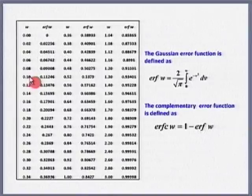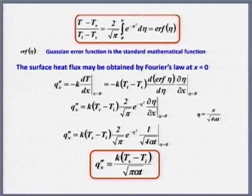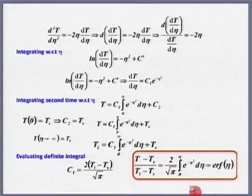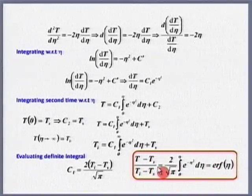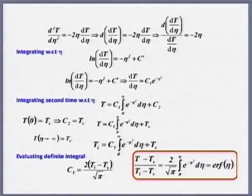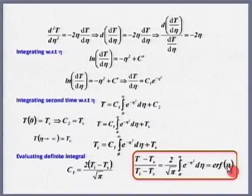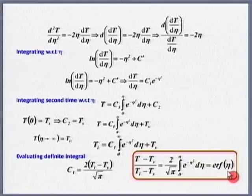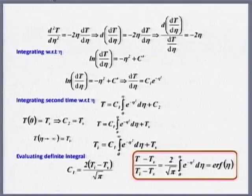For example, at w = 0.1 the error function gives 0.11246. So I can directly plug in and get the temperature distribution. T_s is the surface temperature, T_i is the initial temperature, and T at any x and time t can be computed since η = x/√(4αt) is known.